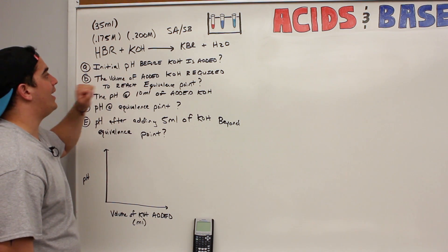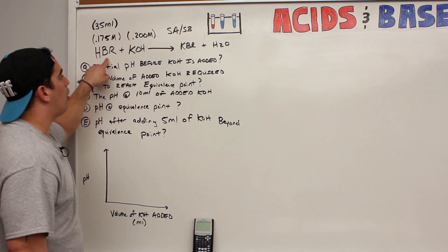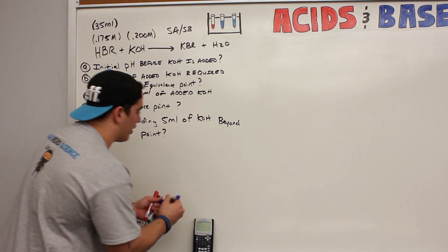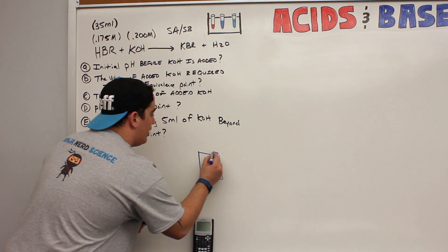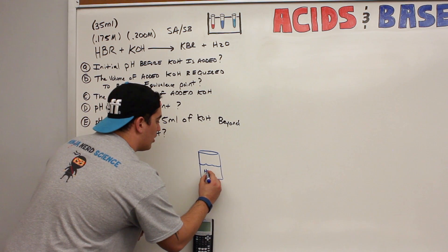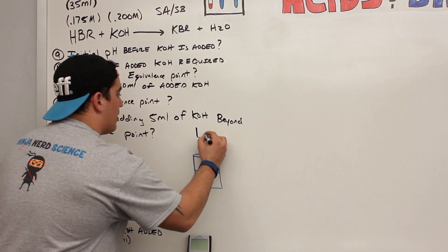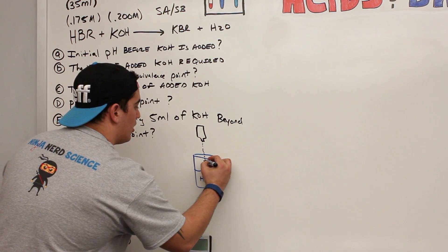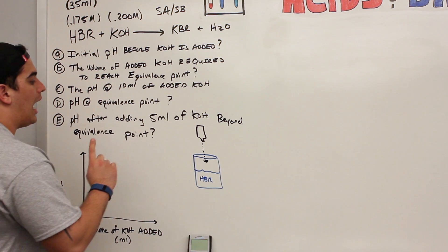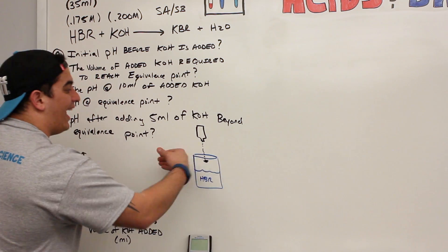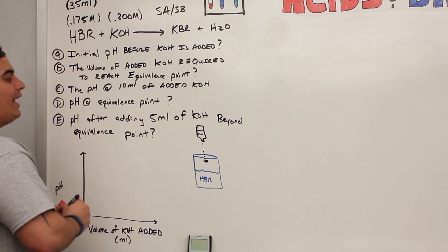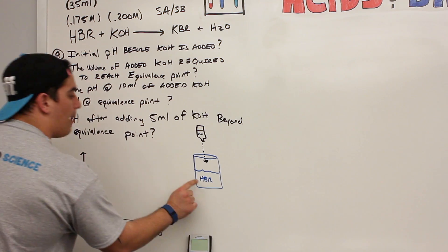Part A asks us to calculate the initial pH of the HBr solution before any KOH is added. So I have a beaker with hydrobromic acid in it, and I'm going to slowly drip in potassium hydroxide — that's the titration. But first I want to know: what's the pH of the solution before I add any potassium hydroxide?